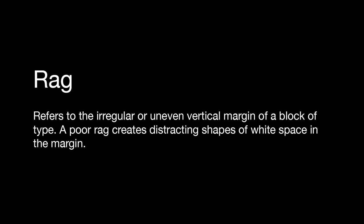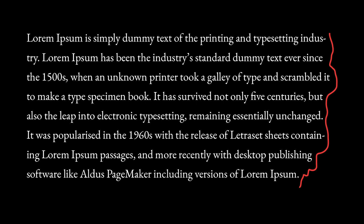The last term is rag. This refers to the irregular or uneven vertical margins of a block of text. A poor rag creates distracting shapes of white space in the margin. If the text is right aligned, on the left side the text will end at different points — looking at the rag means seeing the shape that edge creates. You can do some maneuvering of words and letters, and use hyphens if needed, though overall avoiding hyphens is a good practice. Looking at the shape the rag makes is very important.